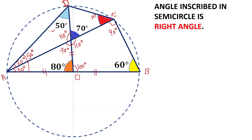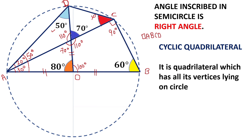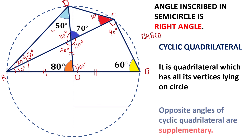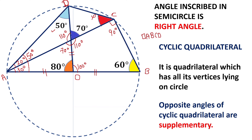So we have all four vertices of this quadrilateral A, B, C, D lying on a circle. So quadrilateral A, B, C, D is nothing but a cyclic quadrilateral. Those who don't know — a cyclic quadrilateral is a quadrilateral which has all its vertices lying on a circle. And a cyclic quadrilateral has one property: opposite angles of a cyclic quadrilateral are supplementary, meaning their sum is equal to 180 degrees.